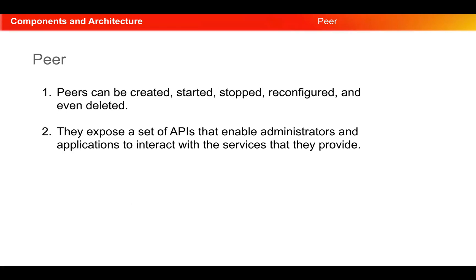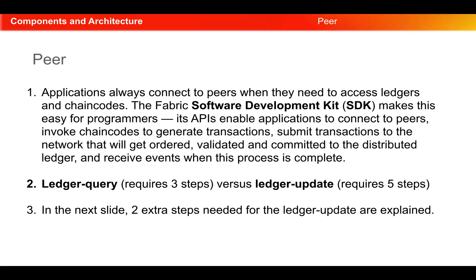Peers can be created, started, stopped, reconfigured, and even deleted. They expose a set of APIs that enable administrators and applications to interact with the services they provide. In the case of a peer, applications always connect to peers when they need to access the ledger and chaincode. The Fabric SDK, which is the software development kit, makes this easy for programmers.